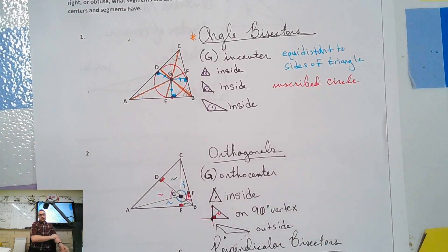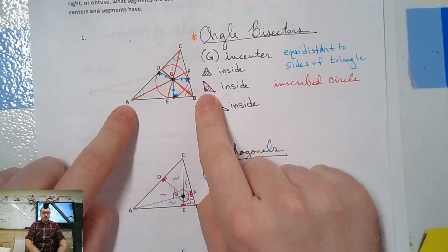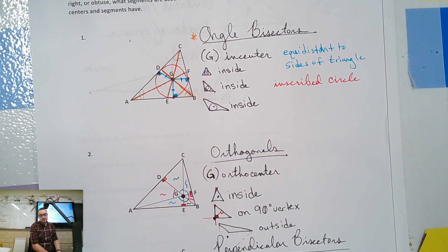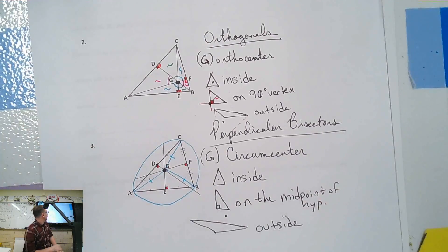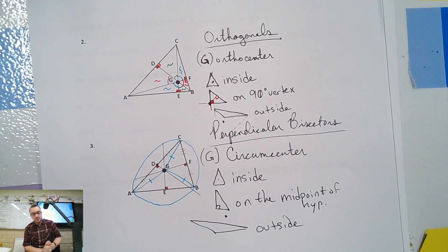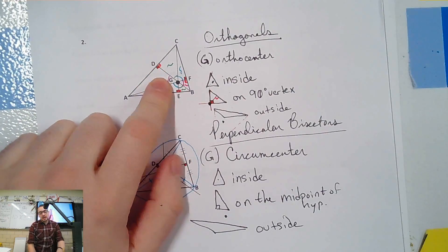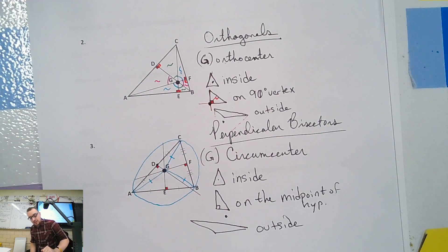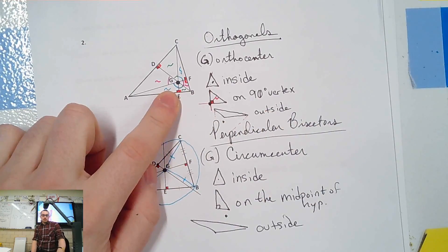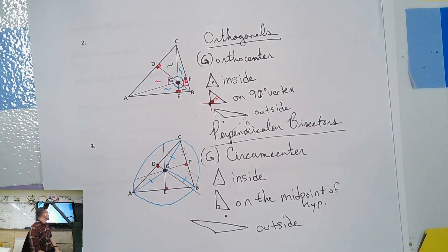Angle bisectors are things that bisect angles, right? And they all intersect at the incenter, which is the center of an inscribed circle, and we have radii. Orthogonals are the 90-degree ones — diagonal means like this, orthogonal means straight up, 90 degrees. Those are also known as the heights of the triangle or the altitudes, right? And when they intersect, they create the orthocenter and a bunch of similar triangles because of vertical angles.